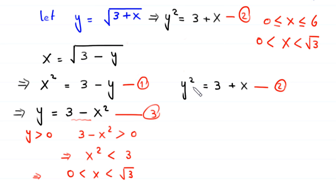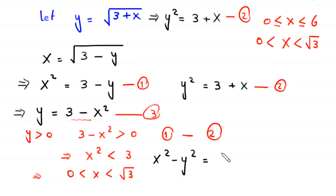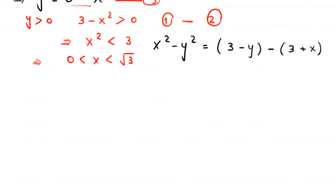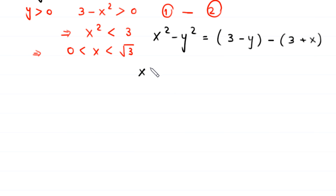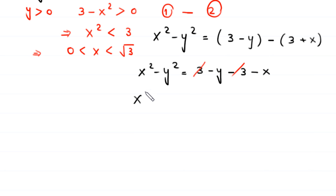From equation 1 we subtract equation 2. This gives x squared minus y squared equals 3 minus y minus (3 plus x). Simplifying, the 3s cancel and we get x squared minus y squared equals negative x minus y, which rearranges to negative x plus negative y.